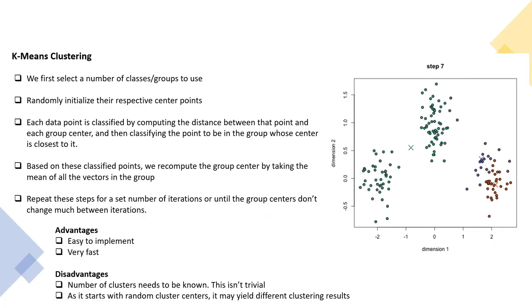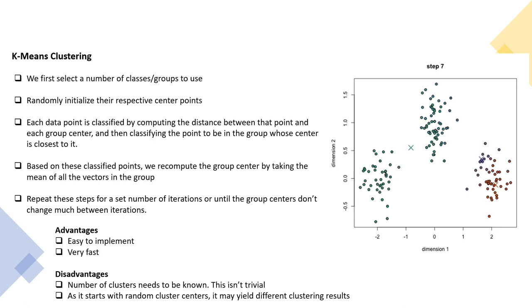K-means clustering is a simple algorithm. We first decide the number of clusters — this is important, because k-means requires you to specify k upfront. Then we randomly initialize the center points of the clusters. For each point in the dataset we find the distance to each cluster center and assign that point to the closest cluster center. After assigning all points, we recalculate the cluster centers.